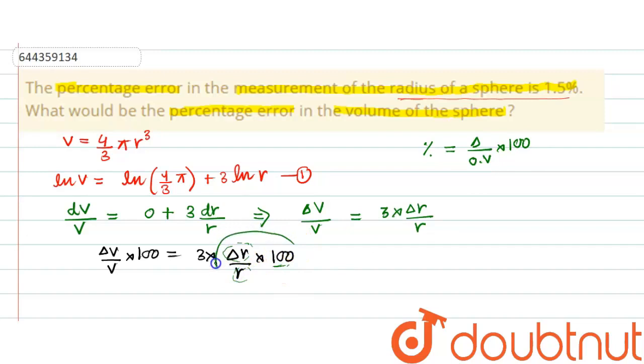is the percentage error in radius, and this value represents the percentage error in volume. From here we can say that percentage error in volume comes out to be equals to 3 times the percentage error of radius,